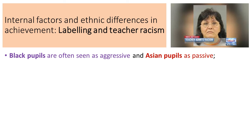Firstly, when thinking about labeling and teacher racism, black pupils are often seen as aggressive and Asian pupils as passive. We've looked before at the role that teacher labeling can play and how that label can be transmitted - students can internalize that label and it can affect the way they behave. If that label is negative, it's going to have a negative impact on the student and the way they view themselves.